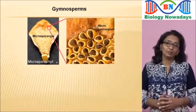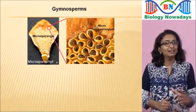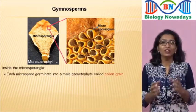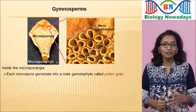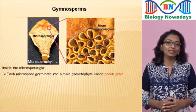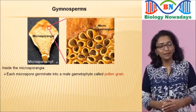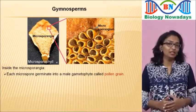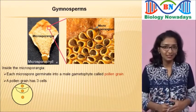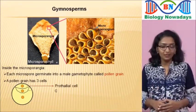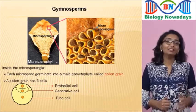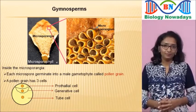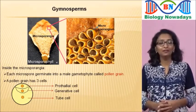Now let's check the microsporangia. Inside the microsporangia, the haploid microspores will germinate into male gametophytes called pollen grains. These pollen grains will later produce the male gametes or sperms. Each pollen grain consists of three cells: a prothallial cell, a generative cell, and a tube cell. At this three-cell stage, the pollen grains are released from the microsporangia and are carried away by wind.